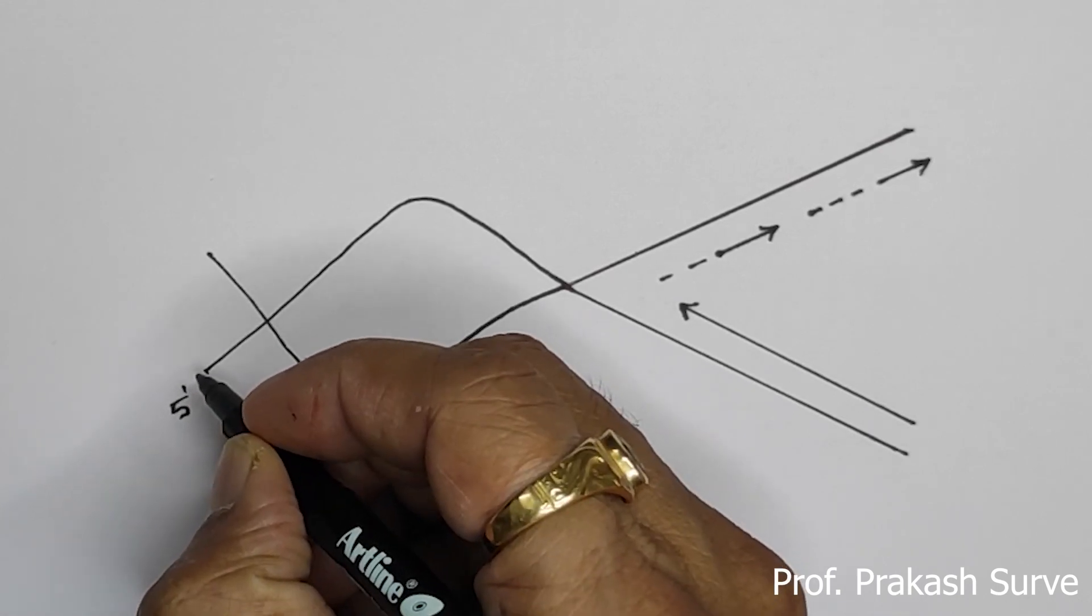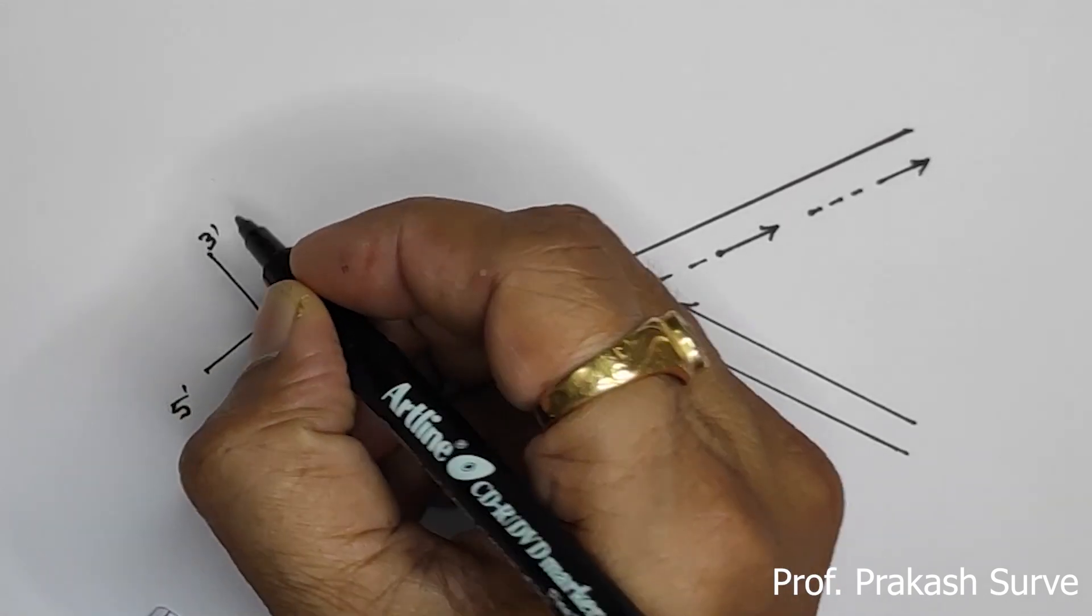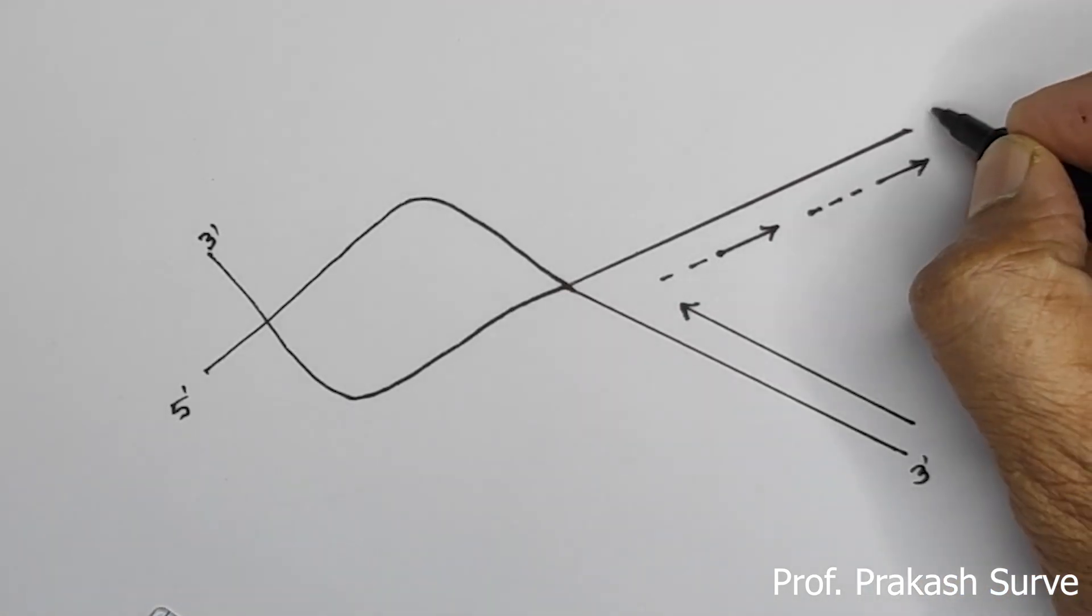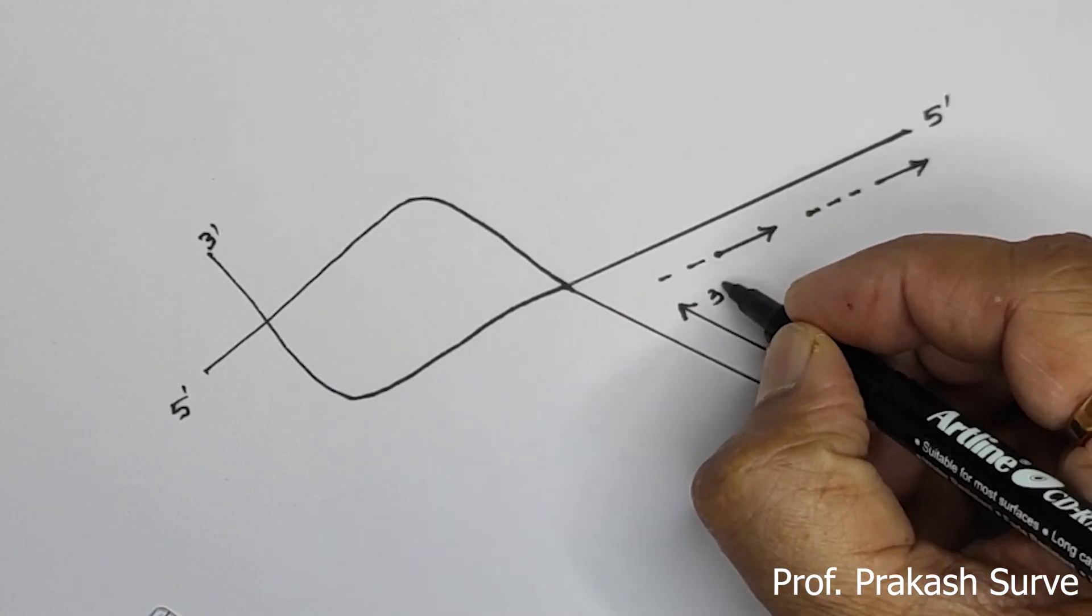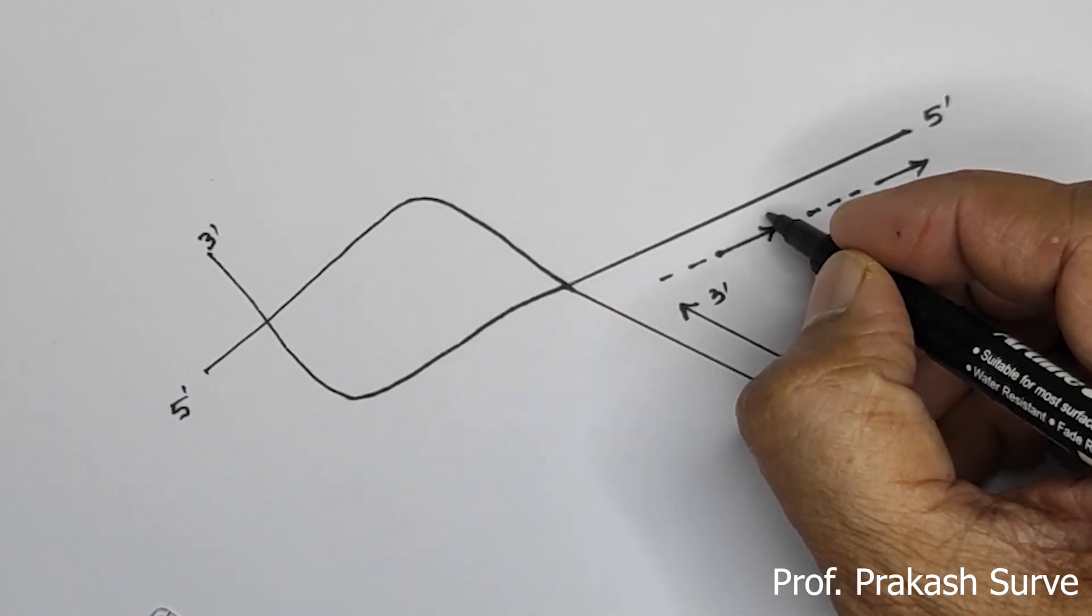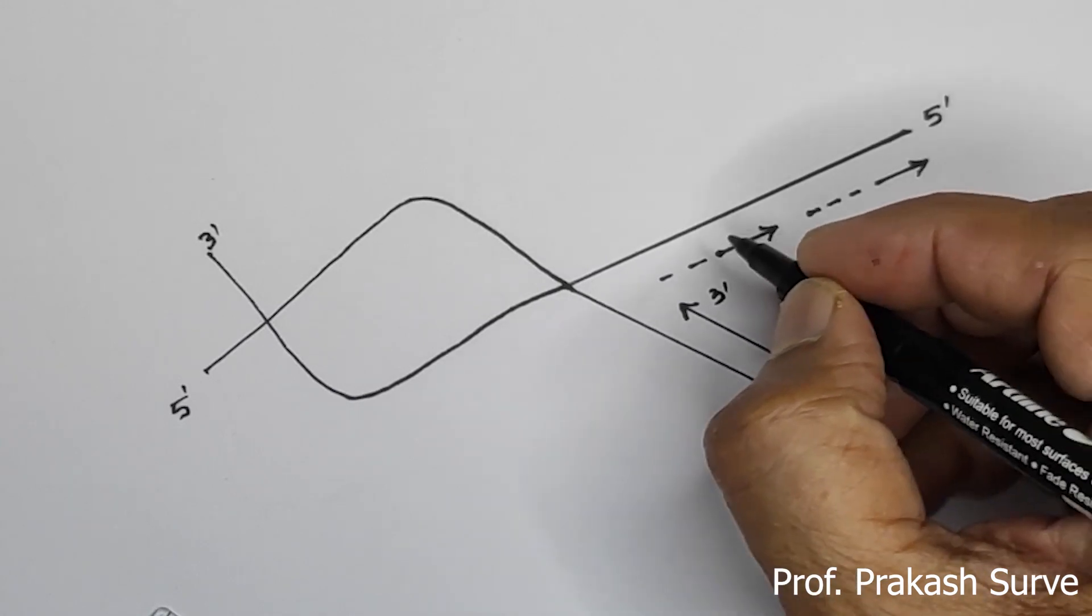So here this is 5 dash, here is 3 dash. Same way here it is 3 dash, here it is 5 dash. And corresponding to this, here the 5 dash and this is 3 dash.